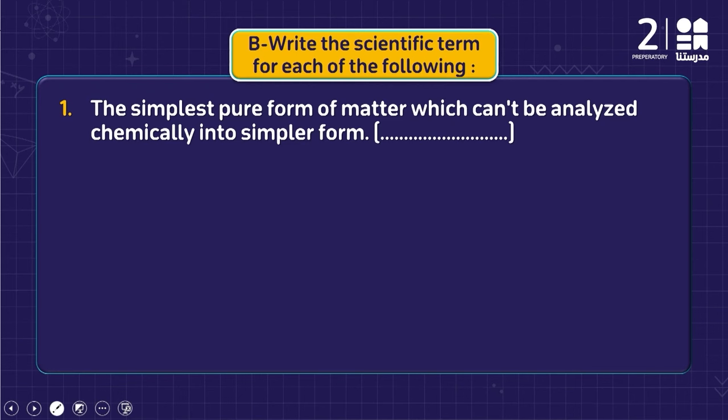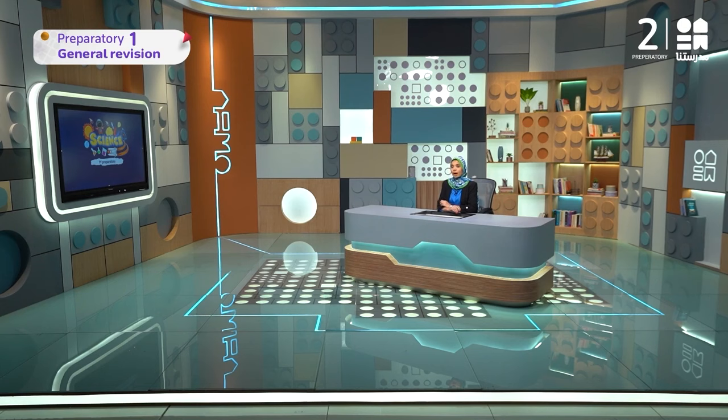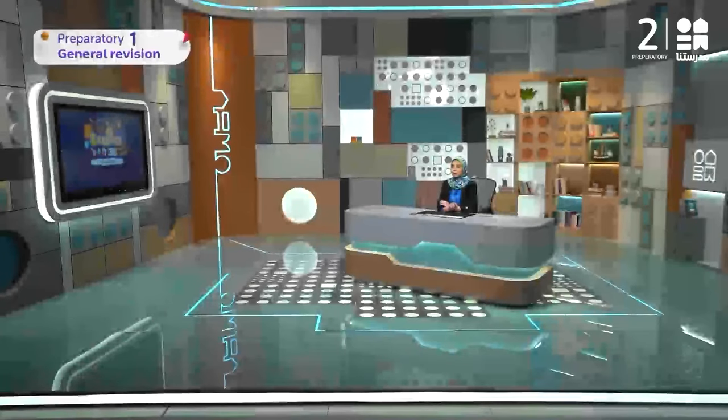The simplest, pure form of matter which cannot be decomposed or analyzed chemically into simpler ones — this is the definition of an element. Examples include oxygen, hydrogen, bromine, mercury, iron, and copper. All of these are elements; they are the simplest, pure form of matter.